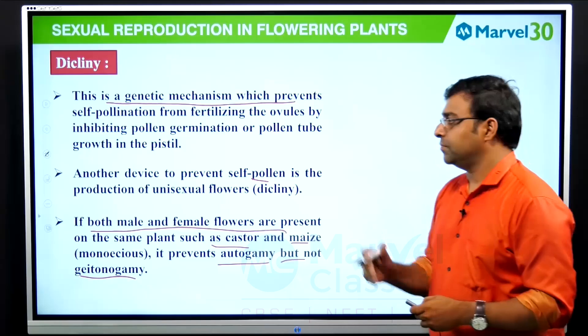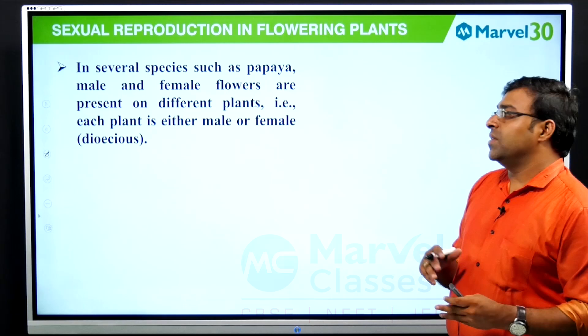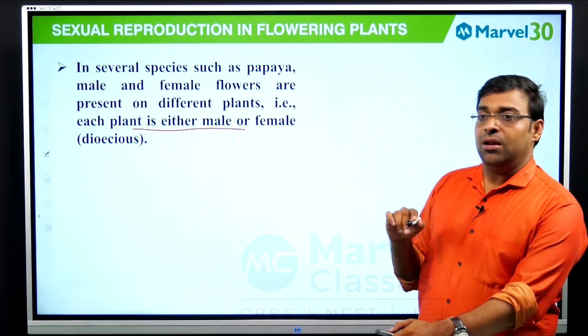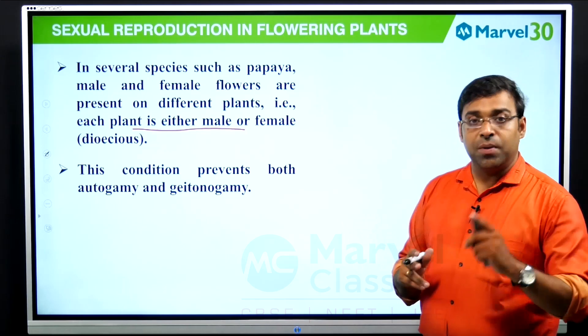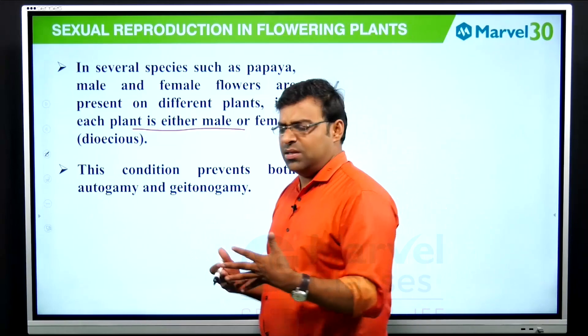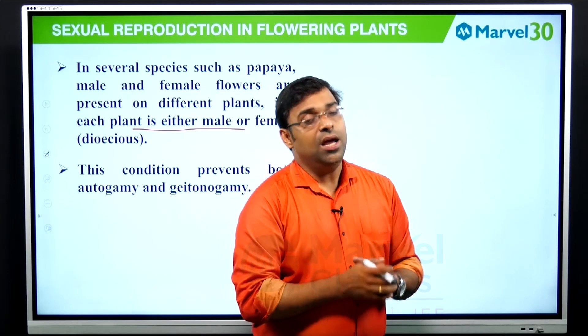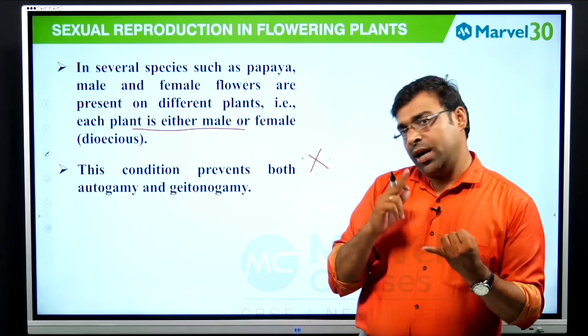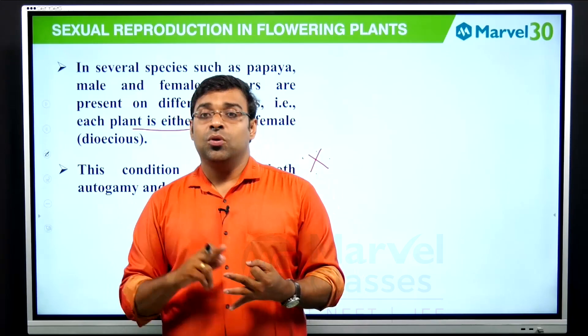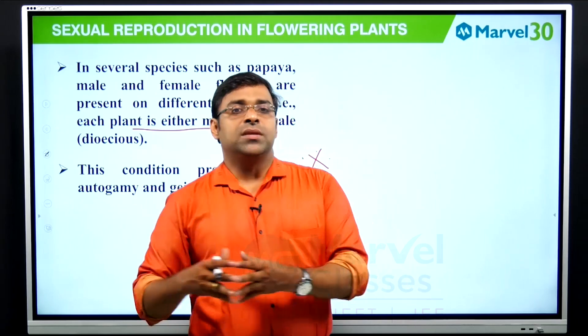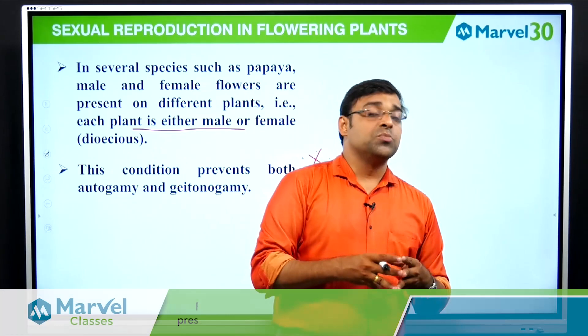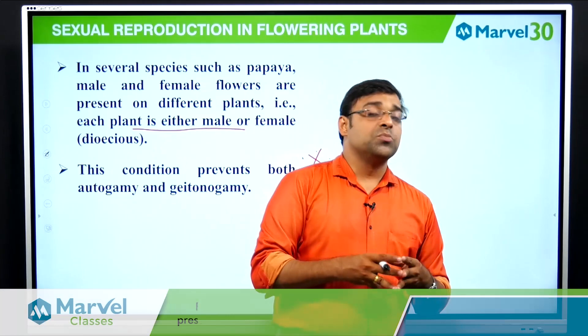In several species such as papaya, male and female flowers are present on different plants — each plant is either male or female. This condition is called dioecious, and it prevents both autogamy and geitonogamy. Today we dealt with outbreeding devices: heterostyly, protandry, protogyny, self-incompatibility, and unisexual flowers. In our next class, we'll deal with more interesting topics. Thank you, students.